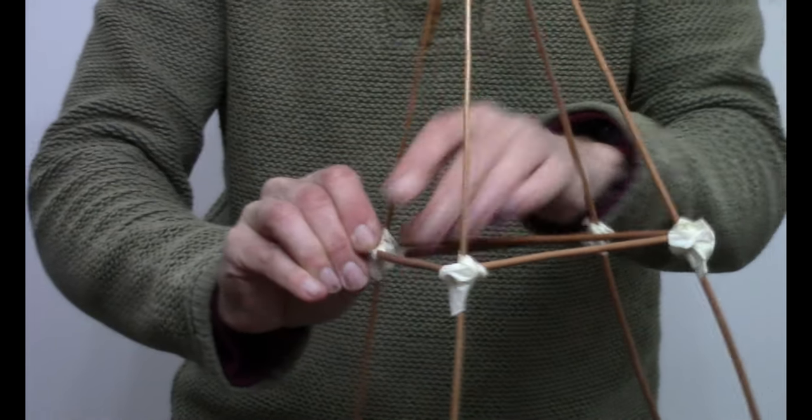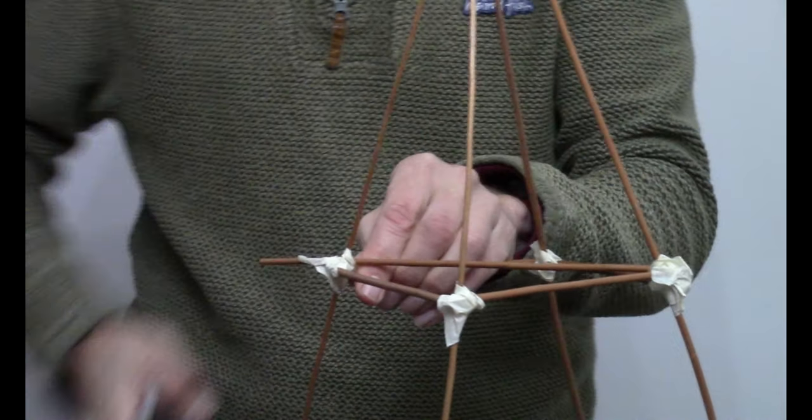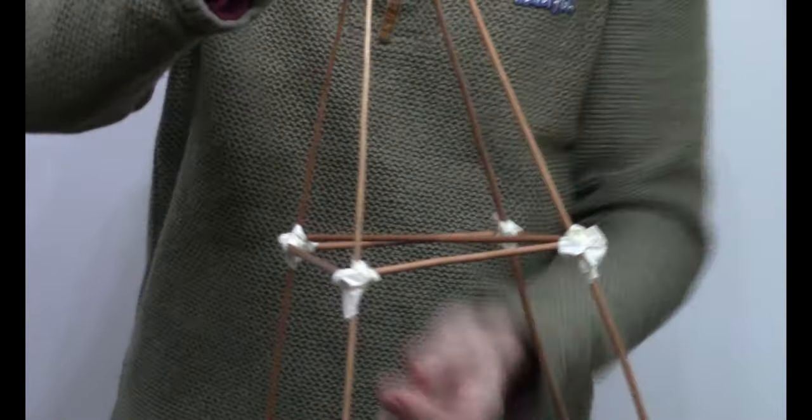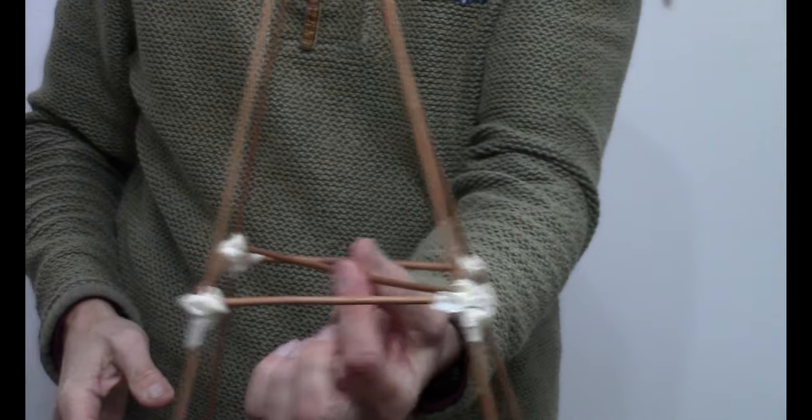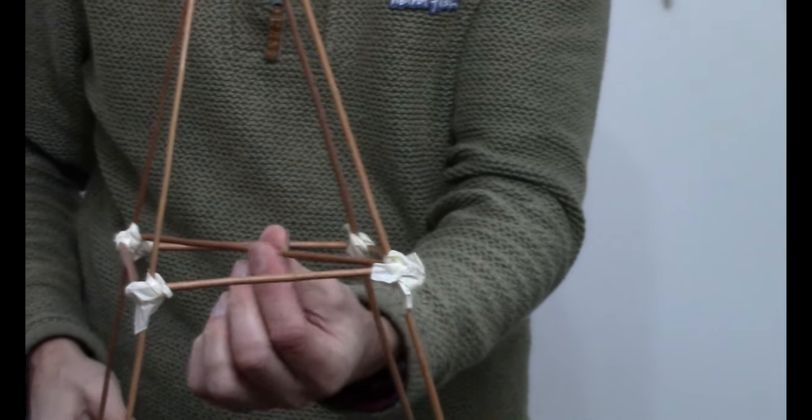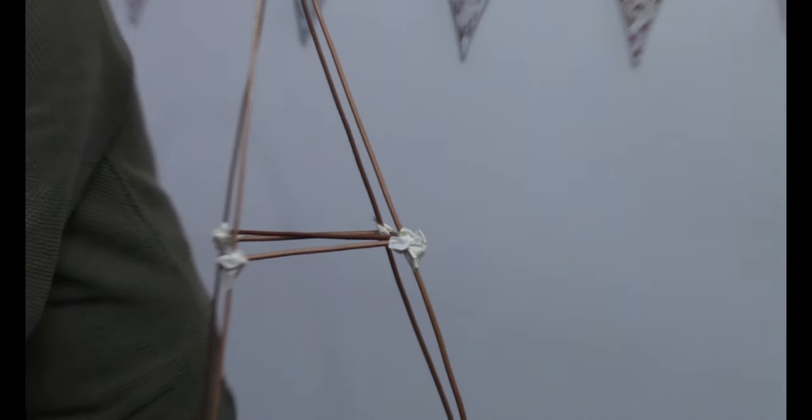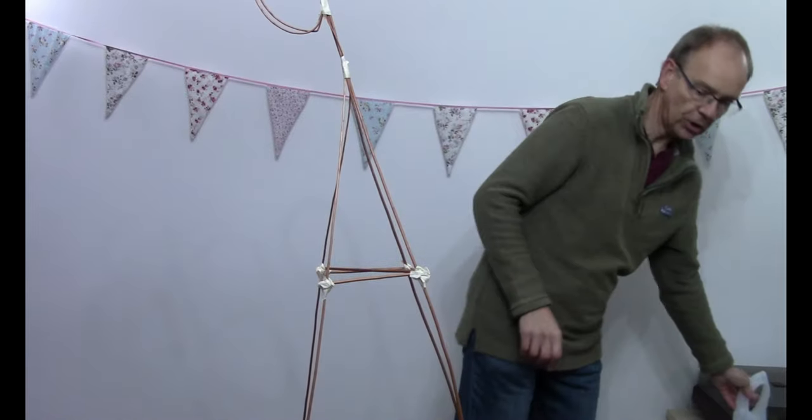And like so. And that's cut off the excess there. So that gives you also, not only holds its shape better, it also gives you something to hang the lantern off. Okay, so the next step, so that's the basic structure done. The next step is to actually stick on the tissue paper.